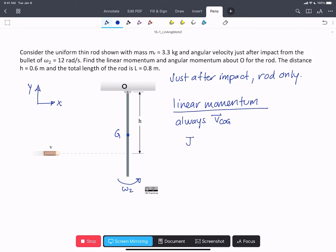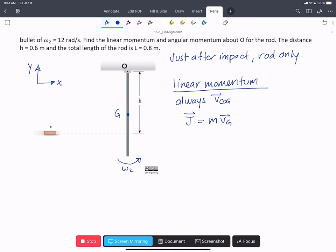So we can write that J, linear momentum, which is a vector, equals M times V_G. In order to find V_G, we have to determine the velocity here based on our kinematics.